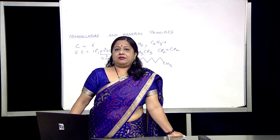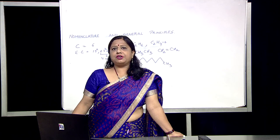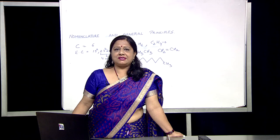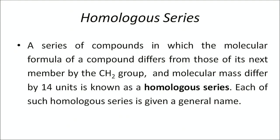For naming the organic compound, you should know a few terms beforehand. The first is homologous series. A series of compounds in which the molecular formula of a compound differs from that of its next member by a CH2 group and the molecular mass differs by 14 units is known as a homologous series.